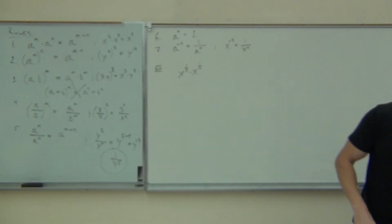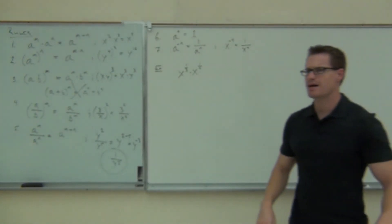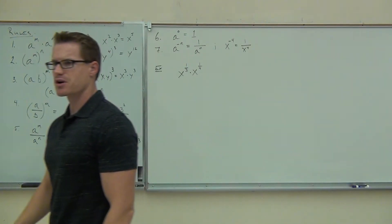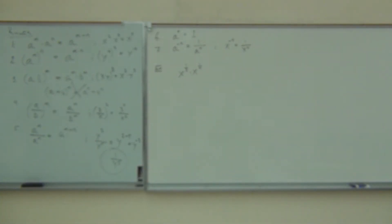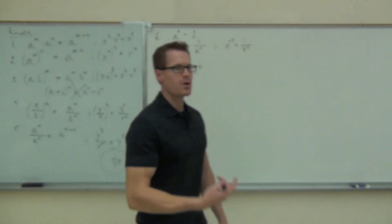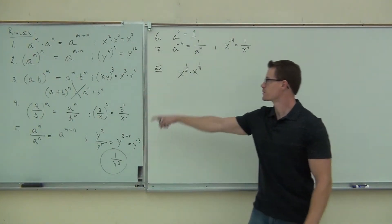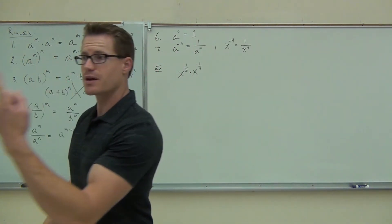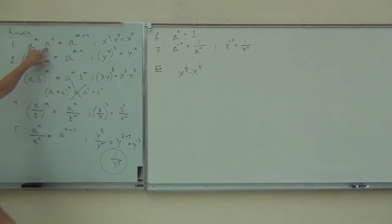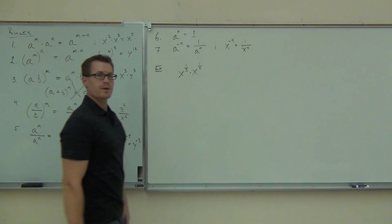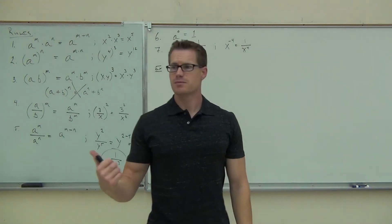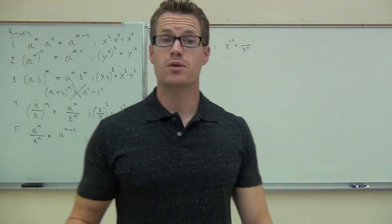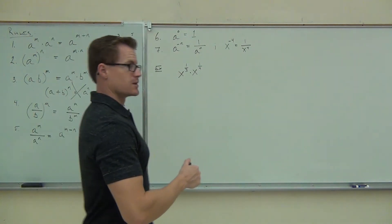Okay, we got x to the 1/3 times x to the 1/4. Ladies and gentlemen, do we have a common base there? And they're being multiplied. So when we look at this, we're multiplying them. What situation are we most like, rule 1 through 7? Which one are we most like? Rule number 1. I've got two things with a common base that are multiplied together, and I have some exponents up there. So what am I going to do to those exponents? Add them. For sure I'm going to add them.